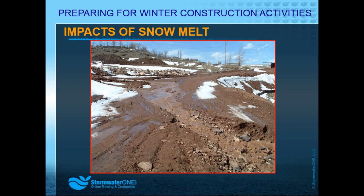Here's another classic example. In Colorado it snows and may melt relatively quickly. Coming onto this roadway from the top right, you see run-on coming down and co-mingling with runoff from the project itself. You see cutting and scouring across the roadway, concentrating into heavy gully erosion on the other side of the road in the bottom right of the photo. This demonstrates the kind of damage you can have from stormwater runoff — in these examples specifically from snow melt.